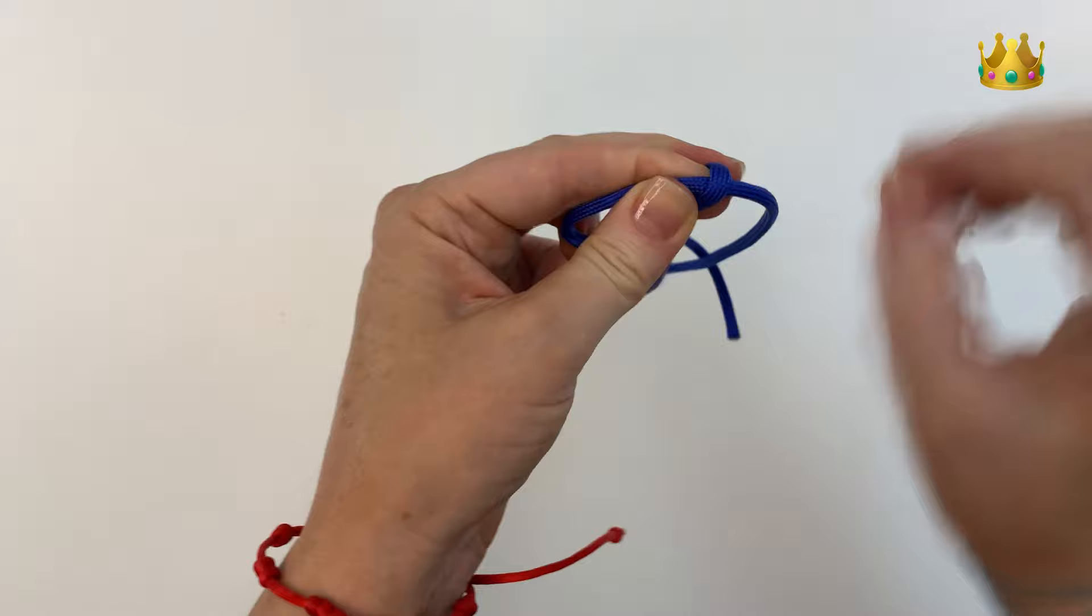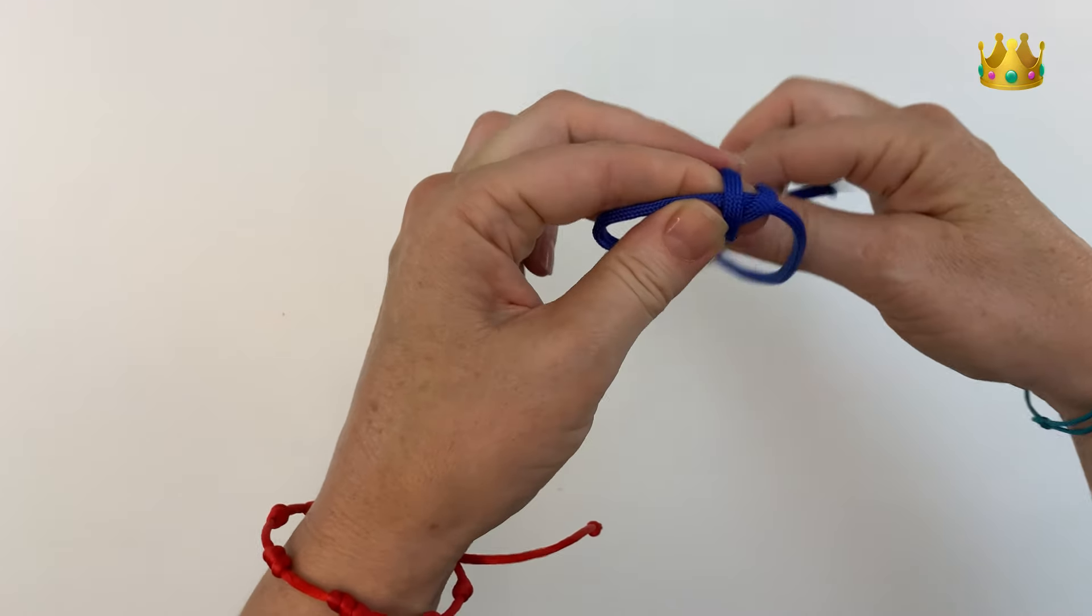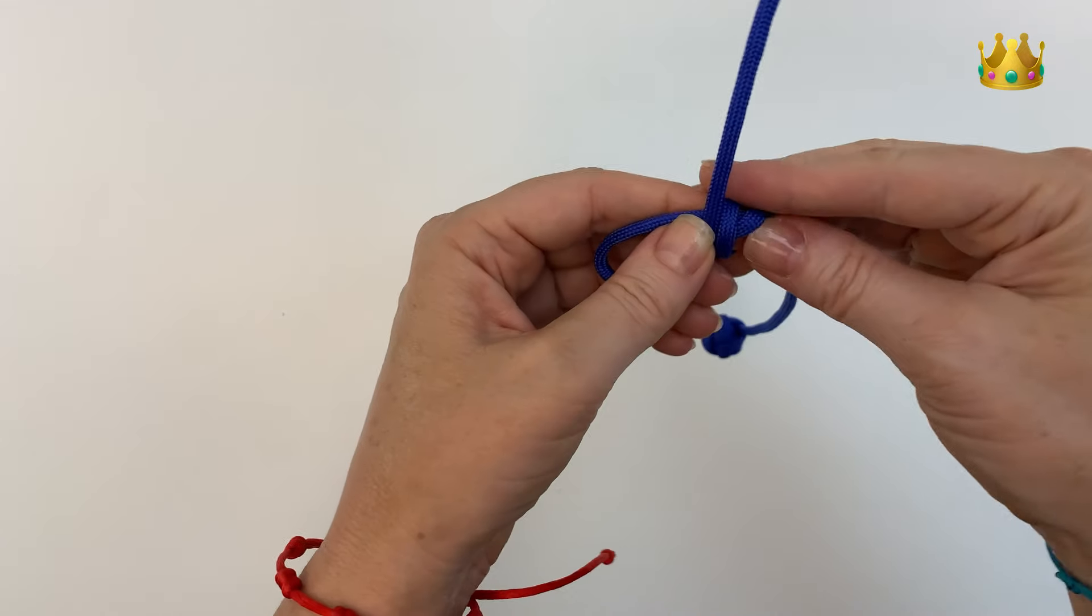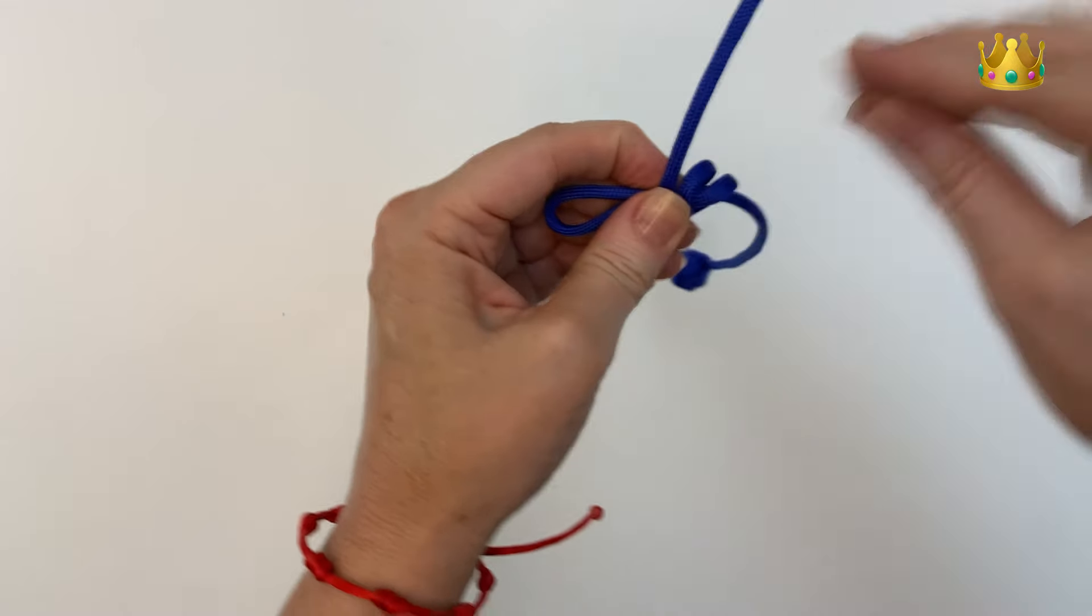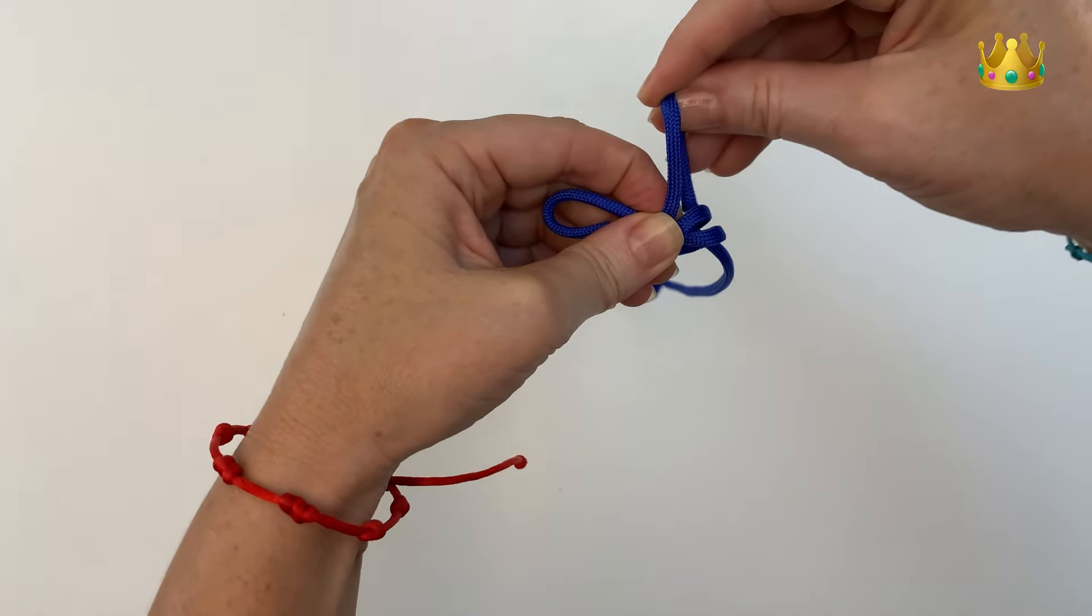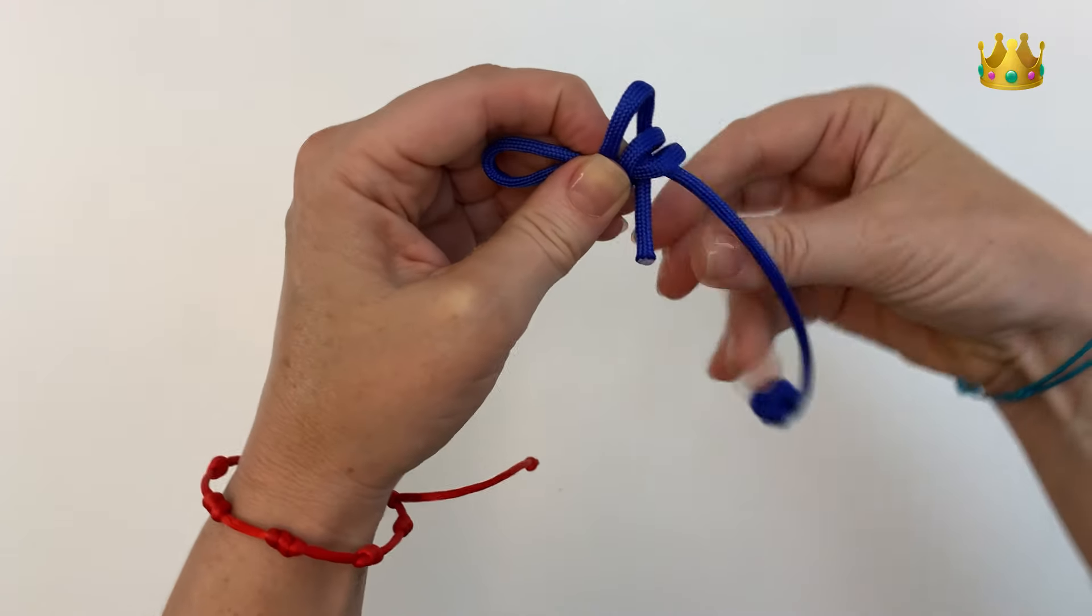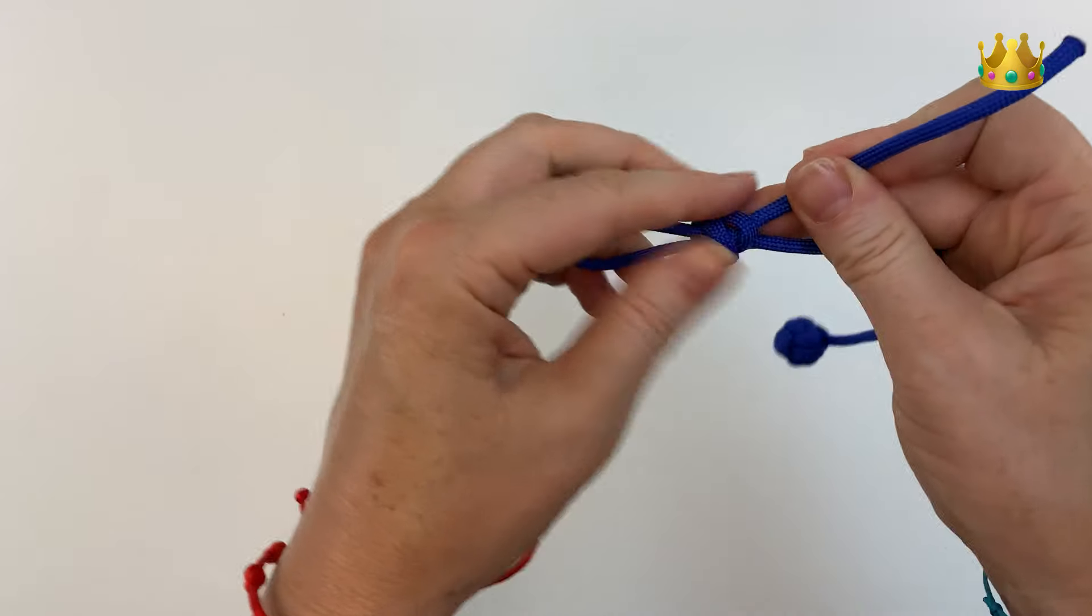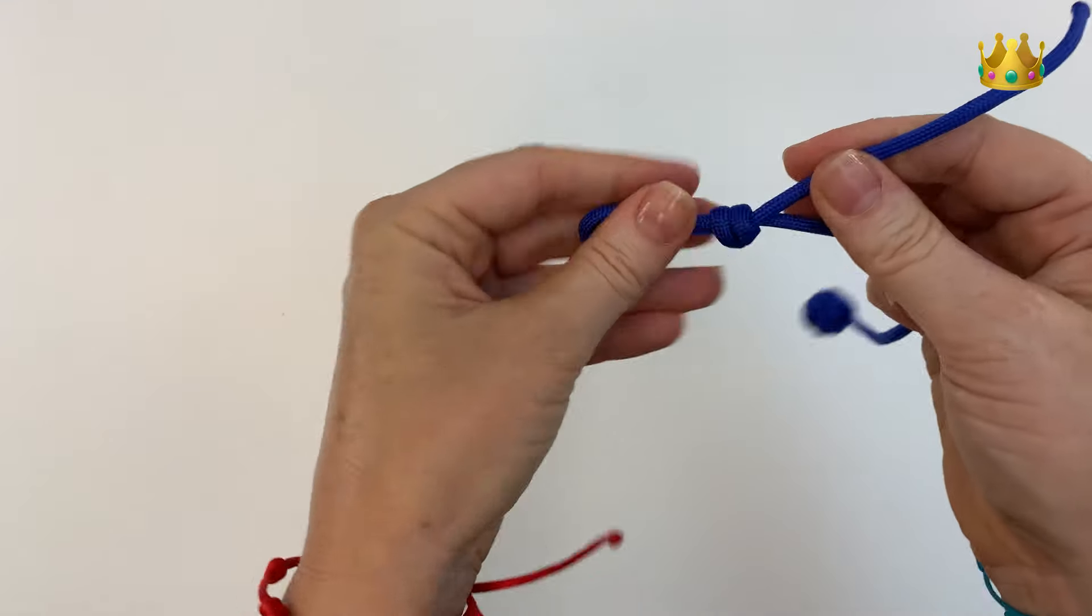Now gently removing those two loops off our finger, bending the end of our cord around and placing it down both loops, pulling it out the right hand side and gently pulling our knot down nice and tight and tidy.